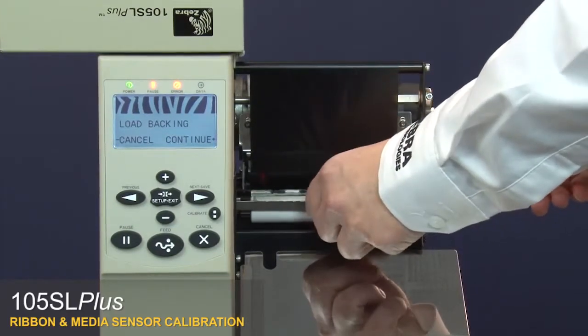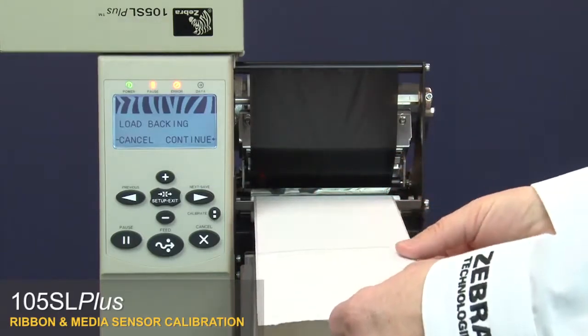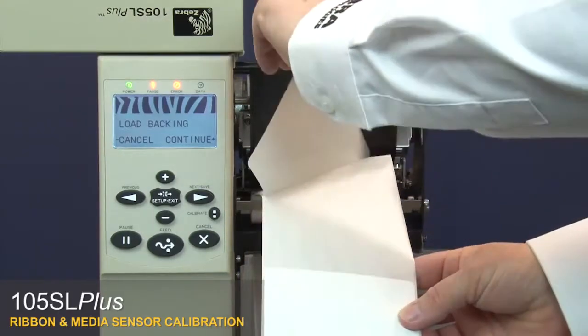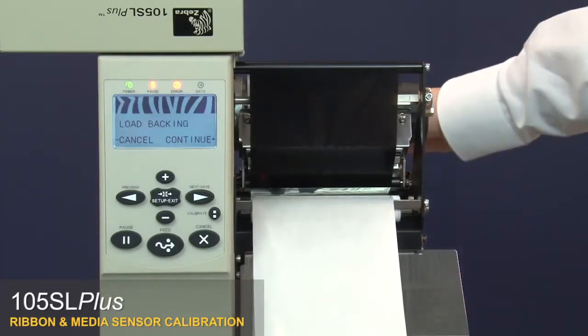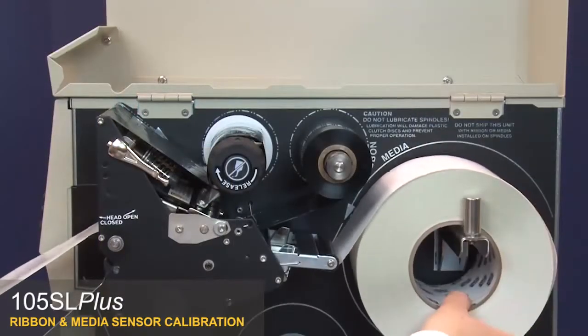Remove the labels from about 8 inches or 200 millimeters of the liner. Pull the media back into the printer so that only the liner is between the media sensors.